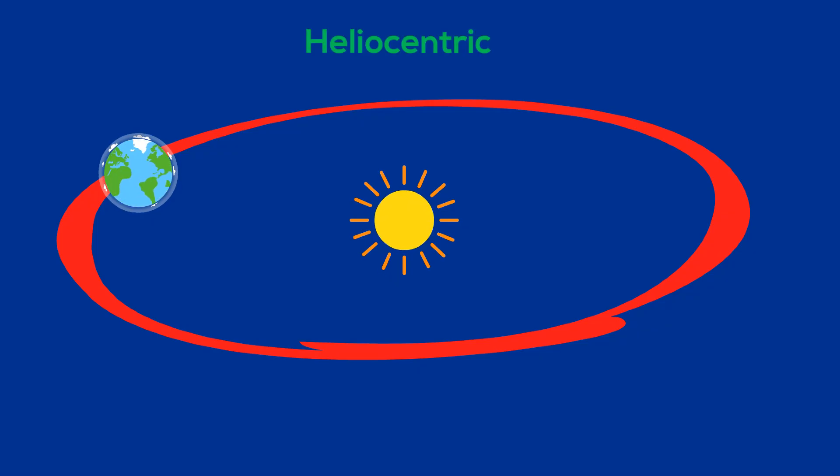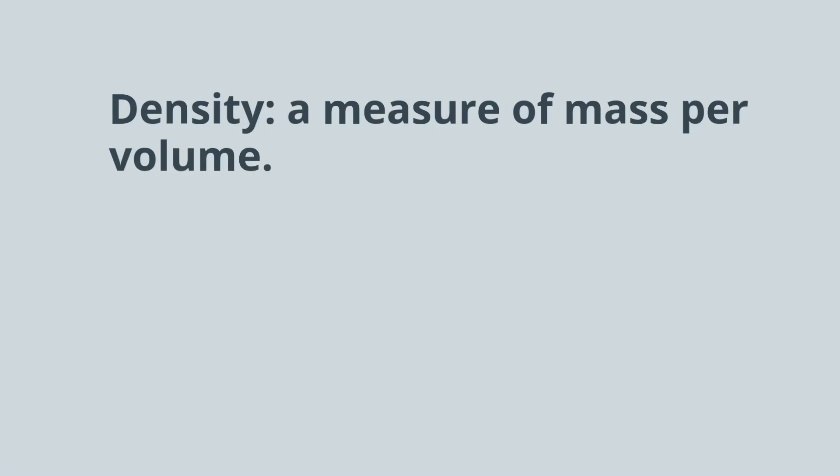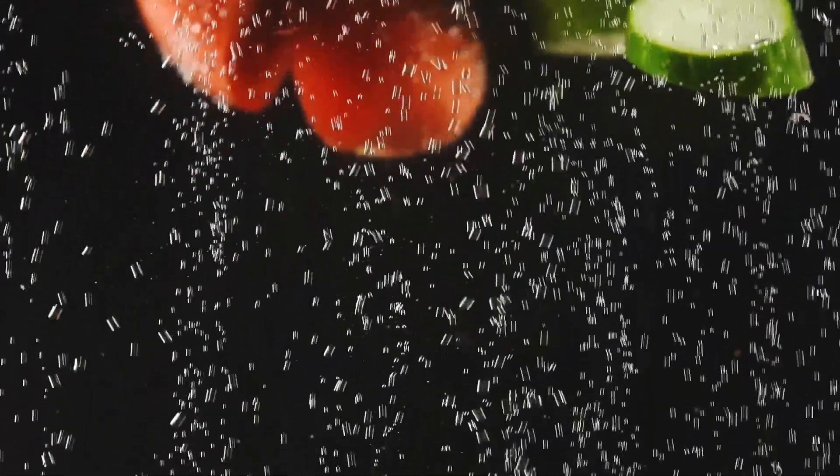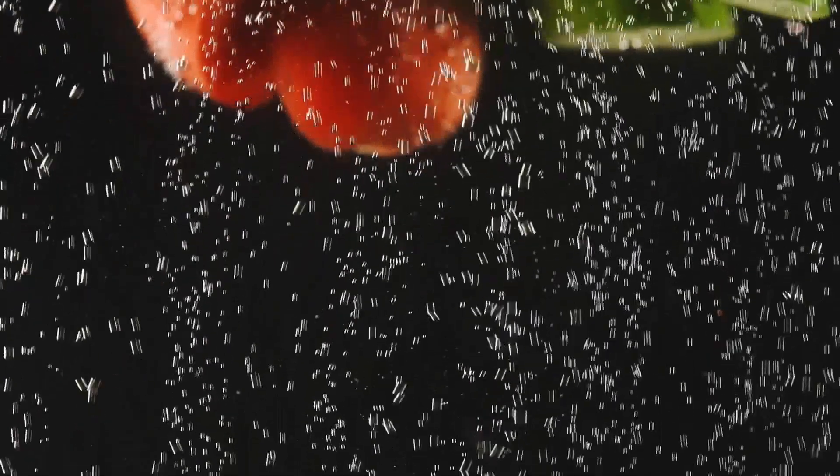And finally, we have density. A measure of mass per volume. And the formula is mass divided by volume. And here's an example. These vegetables are floating because their density is less than water.